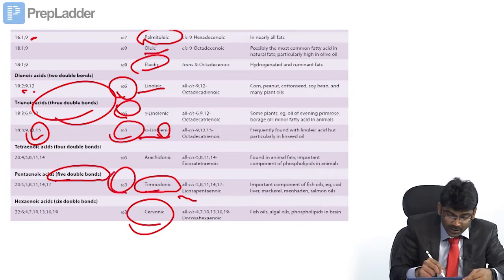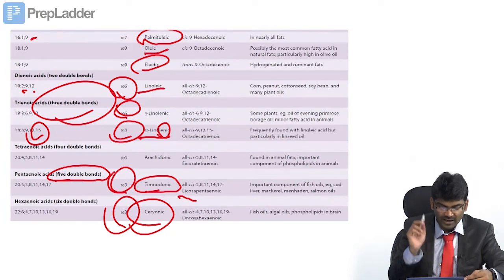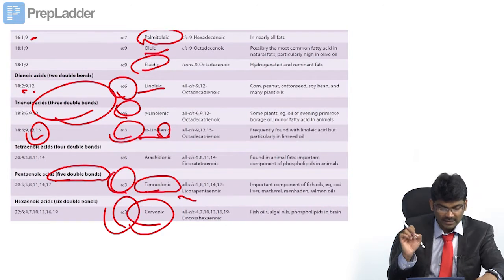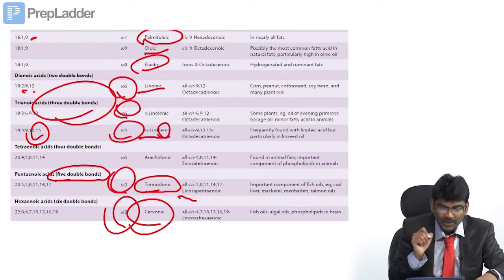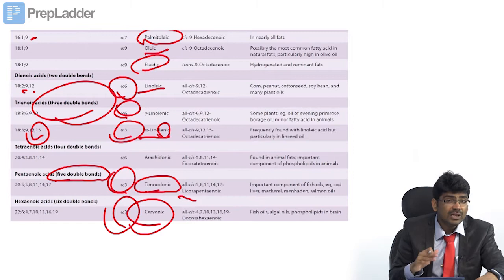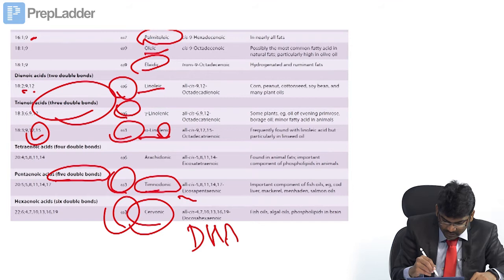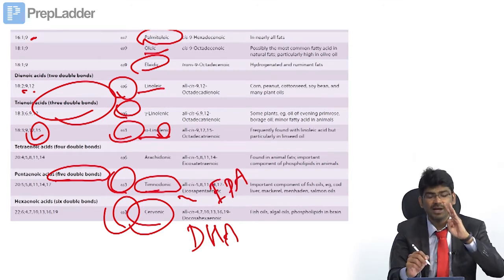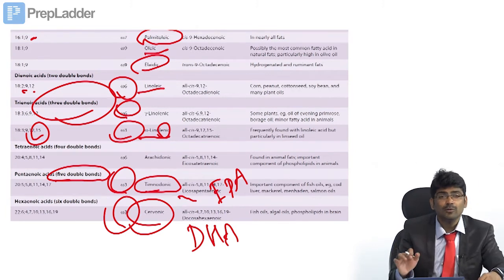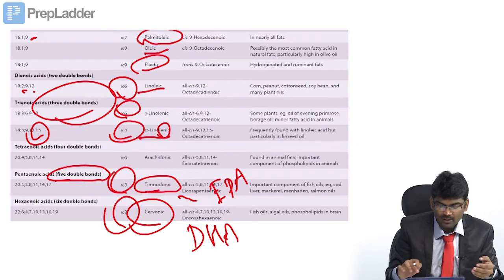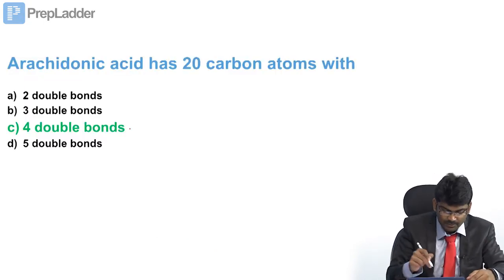The three omega-3 fatty acids are very important: alpha-linolenic acid, eicosapentaenoic acid (EPA), and docosahexaenoic acid (DHA, also known as cervonic acid). These are the three omega-3 fatty acids. The answer to how many double bonds arachidonic acid has is four double bonds.